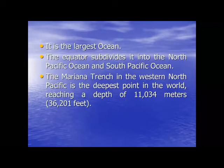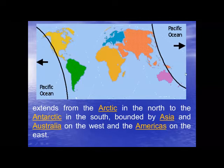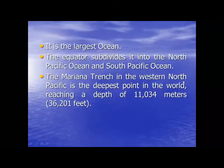Pacific Ocean is the largest ocean. The equator divides the Pacific Ocean into two parts — Northern Pacific and Southern Pacific. Above the equator is Northern Pacific and below the equator is Southern Pacific. Mariana Trench is present in Pacific Ocean and it is the deepest part of the world.